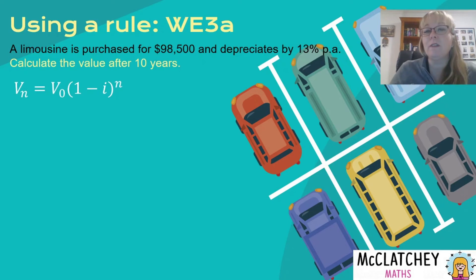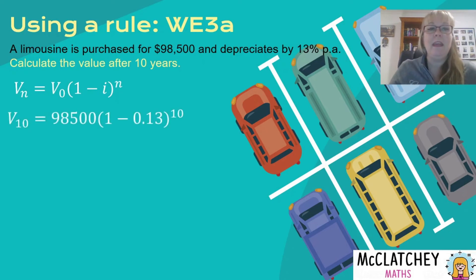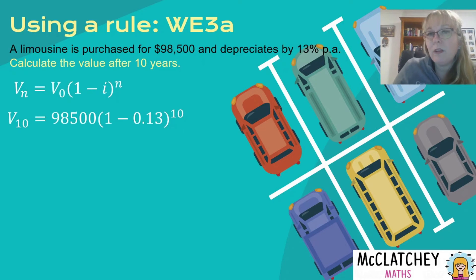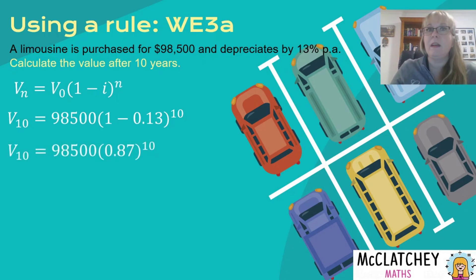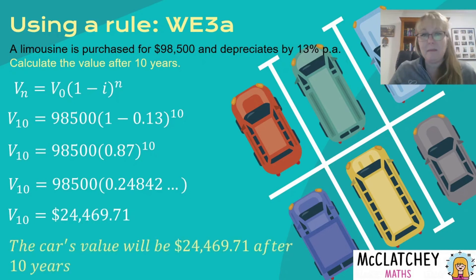A limousine is purchased for $98,500 depreciating by 13% per annum. We want to find the value after 10 years. Using the rule, V10 = 98,500 × (1 − 0.13)^10. Evaluating the bracket first: 0.87^10, then multiplying by 98,500. Following order of operations gives us a value after 10 years of $24,469.71. Since V10 wasn't directly asked for, we write that in a statement.